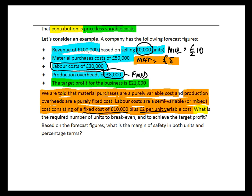Our requirement asks: what is the required number of units, firstly to break even — to exactly cover our costs — and secondly to achieve the target profit? You can imagine already that the number of units to achieve a profit is going to have to be higher than the number of units to break even, because breaking even involves making no profit. To make some profit, you'd have to sell more units. We're also asked, based on the forecast figures, what the margin of safety is in both units and percentage terms.